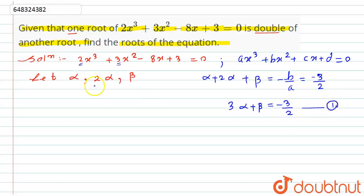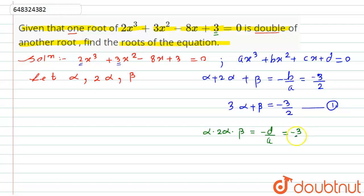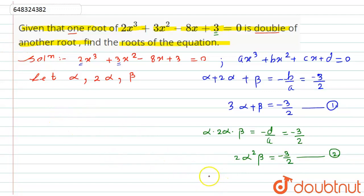Similarly, the product of roots is α · 2α · β = -d/a. Here d is the constant term, which is 3, and a is 2, so this equals -3/2. Therefore 2α²β = -3/2. Let this be equation number 2.